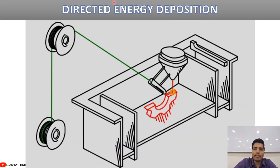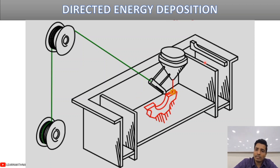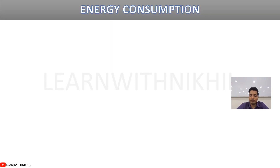Directed energy deposition (DED) uses a spool of material fed from one end and a directed laser source. It is primarily used for printing engine parts and metal components such as aluminum, stainless steel, and titanium. The powder material is directed and the laser is aimed at a specific angle to bind the material and build the object. In some ways it is similar to binder jetting but uses directed laser energy.